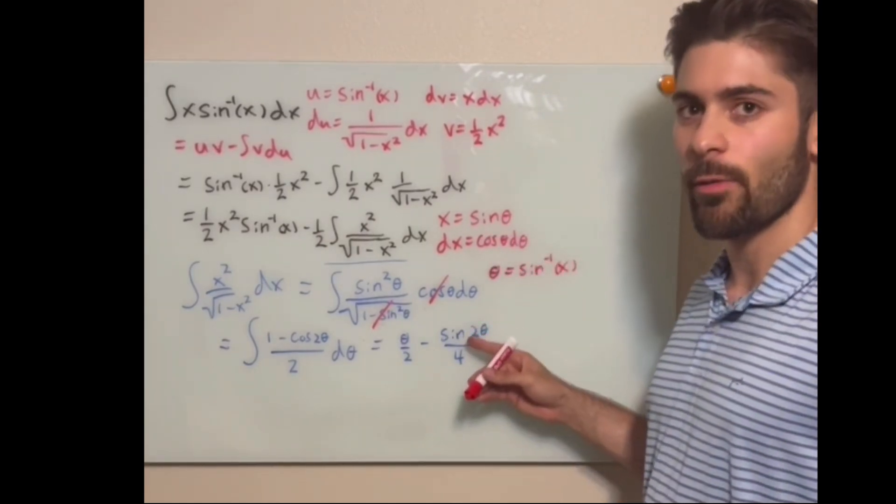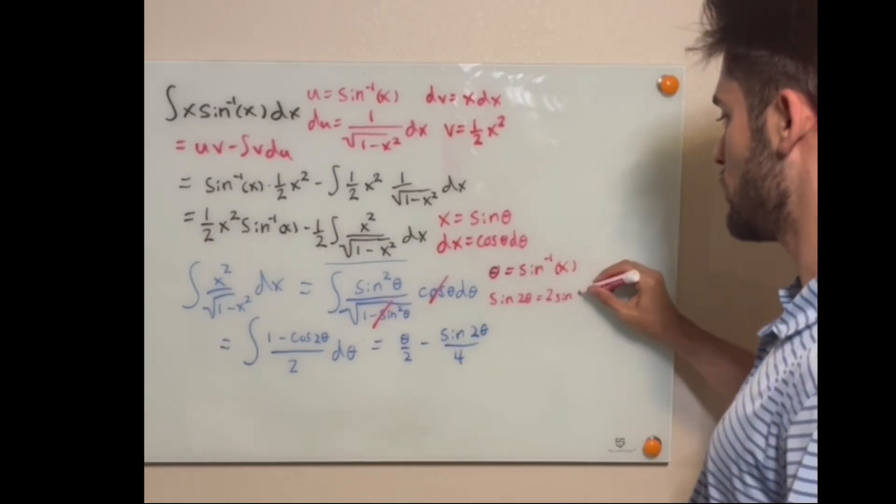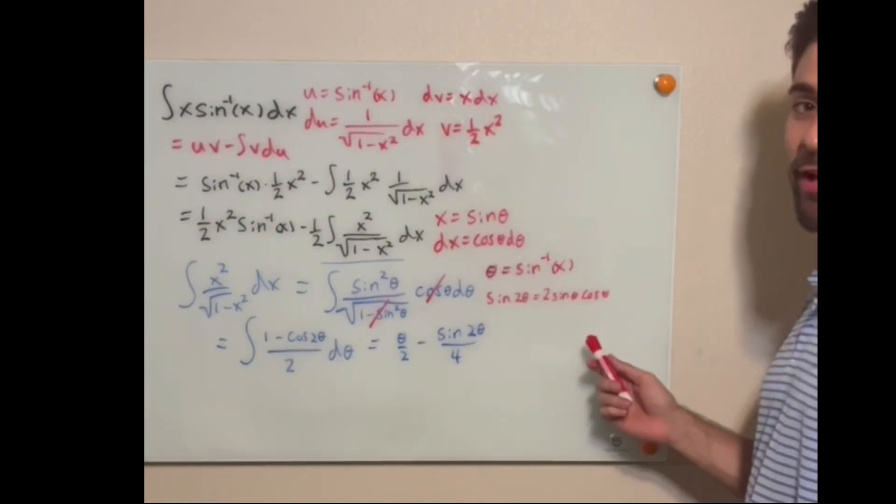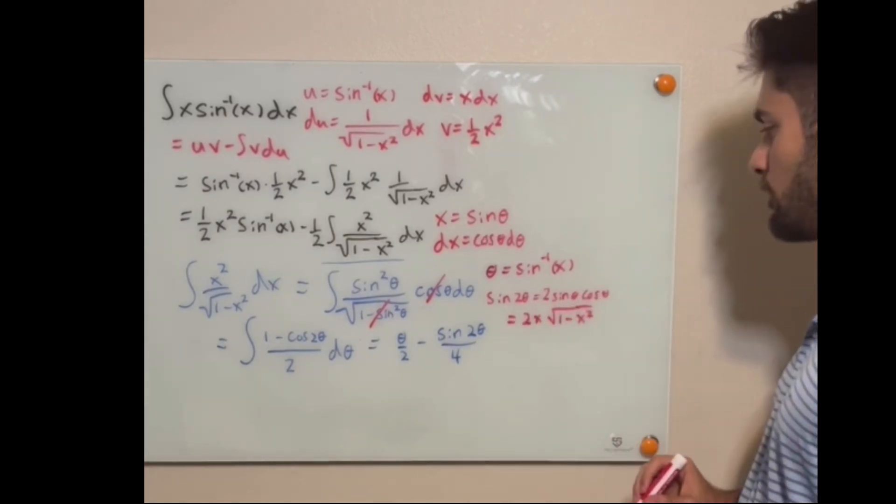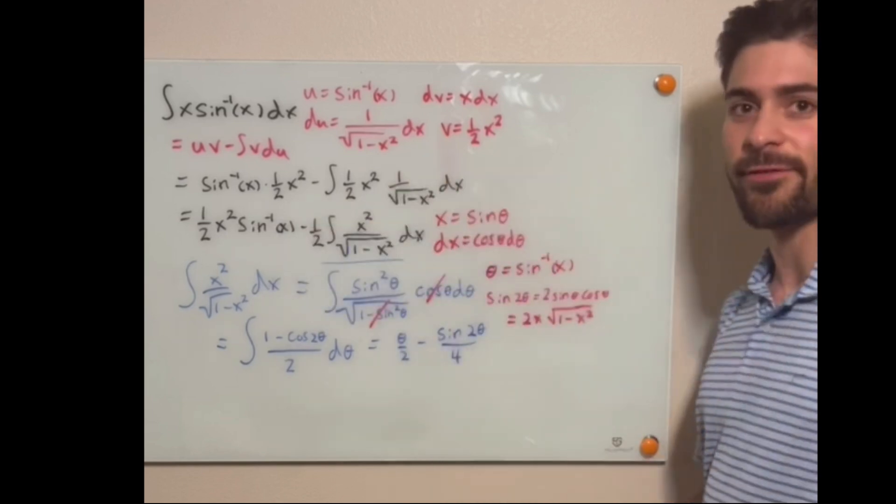How do we deal with the 2 theta? Well, we have to use the double angle formula. So we know sine theta is equal to x, but for cosine, we have to use the Pythagorean theorem. And now we can make all of our substitutions back into here and get the final answer.